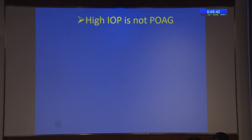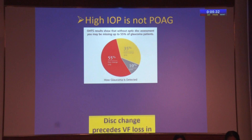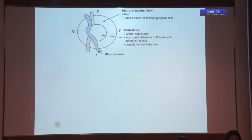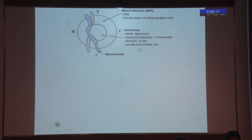High intraocular pressure is not primary open-angle glaucoma. We've seen that many a time a patient might come with high intraocular pressure but does not have any other glaucomatous features. Disc changes precede visual field loss in most cases. The normal disc has a neuroretinal rim — pink, carrying axons of the retinal ganglion cells — the central cup as a white depression, with the horizontal diameter less than the vertical diameter. Usually the horizontally oval cup is normal.